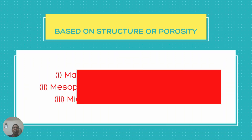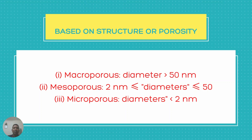Adsorbents are also classified based on porosity. Adsorbents whose pore diameter is greater than 50 nanometers are macroporous materials. Adsorbents whose diameter is within the range of 2 to 50 nanometers are considered mesoporous, and those whose diameter is less than 2 nanometers are considered microporous adsorbents.